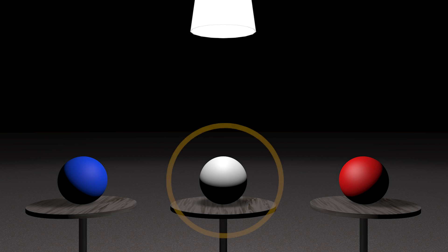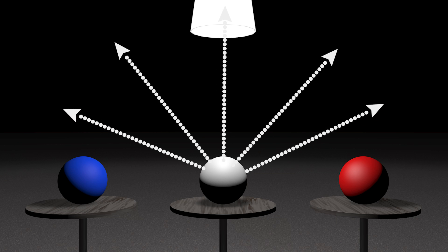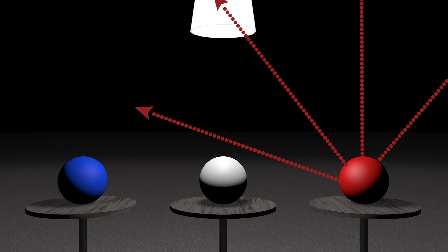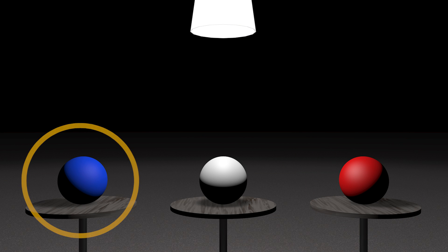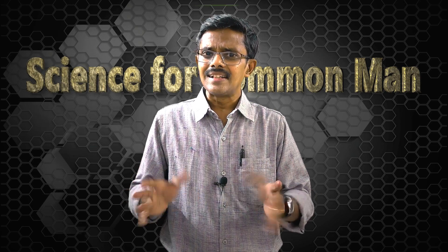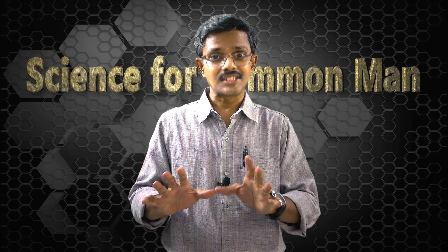That means this ball is white because white light is reflected by the surface of the ball and it is reaching our eyes. And this is red because red light is reflected by it and this is blue because blue light is reflected by it. But our light source is white. Then from where is this blue and red coming out? Let's solve this first.